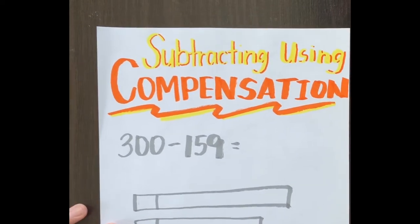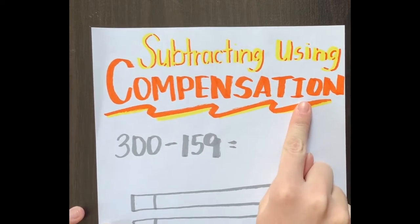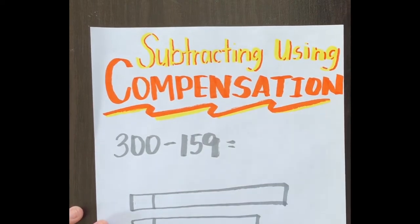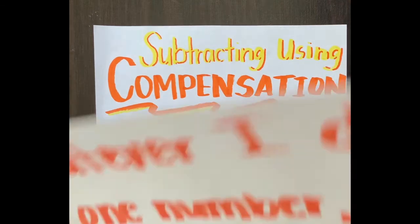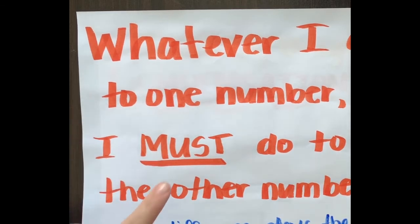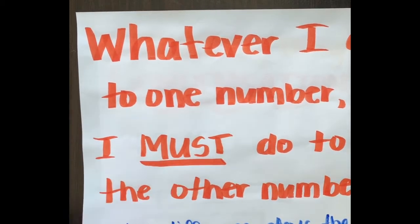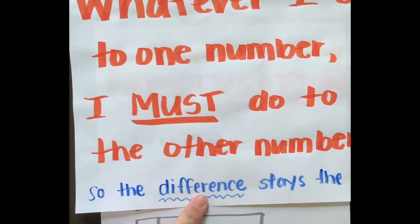Today we are going to be looking at subtracting using compensation. This is very similar to one of the subtraction strategies we talked about last week - same differences. We need to remember: whatever I do to one number, I must do to the other number, so the difference stays the same.